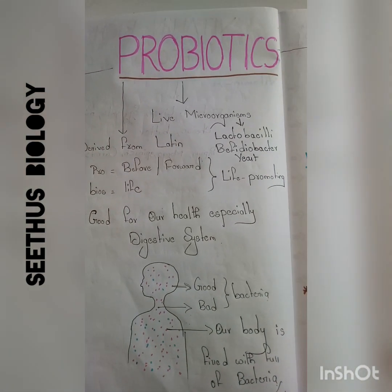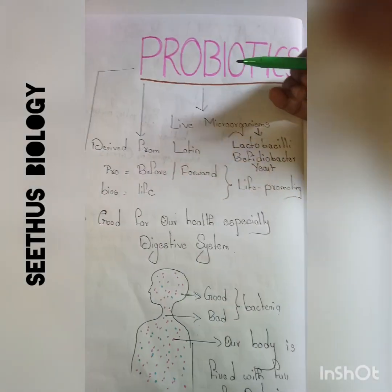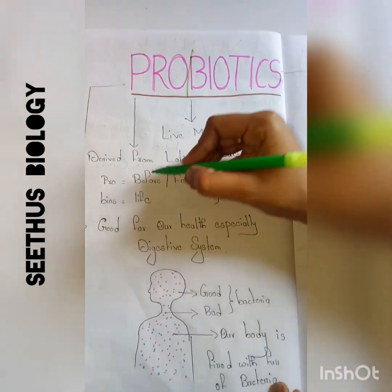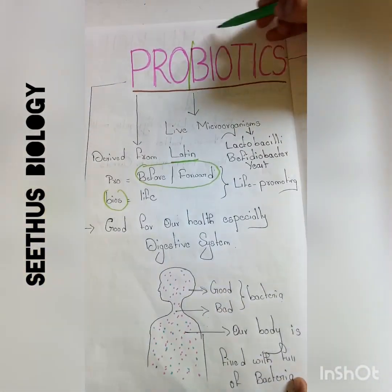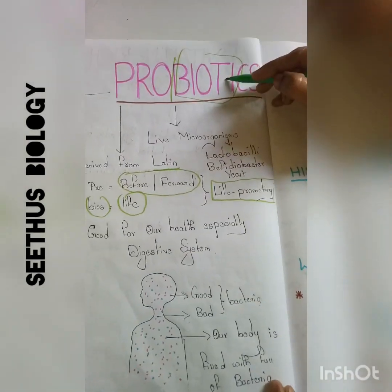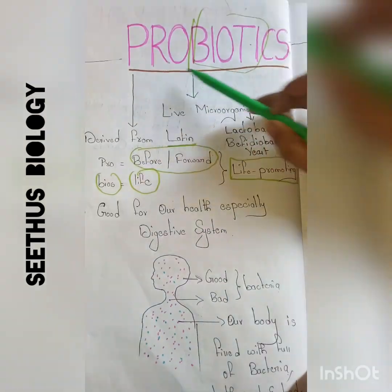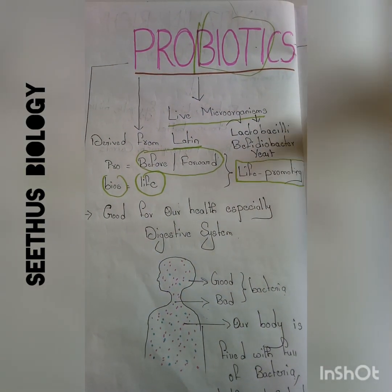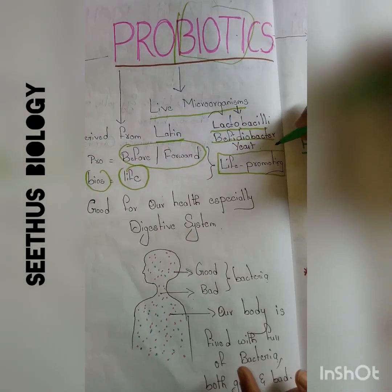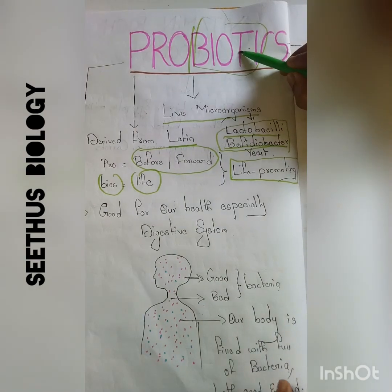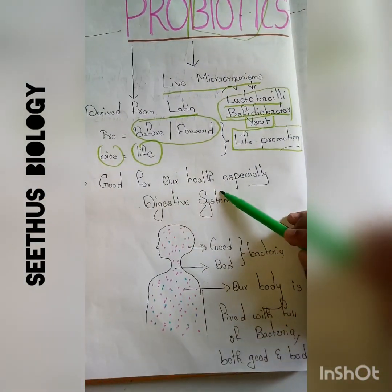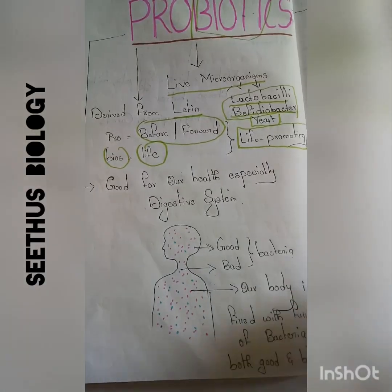Welcome. Today our topic is about probiotics. Probiotics are derived from the Latin words 'pro' meaning 'before' or 'forward,' and 'bios' meaning 'life.' So probiotics are life-promoting agents. These are live microorganisms — either bacteria or yeast — especially Lactobacillus and Bifidobacterium, which are the main bacteria playing a major role as probiotics.